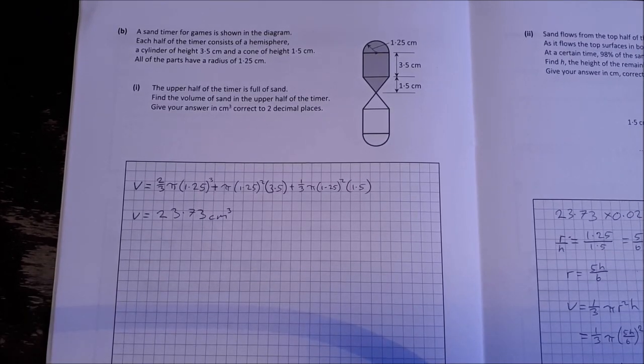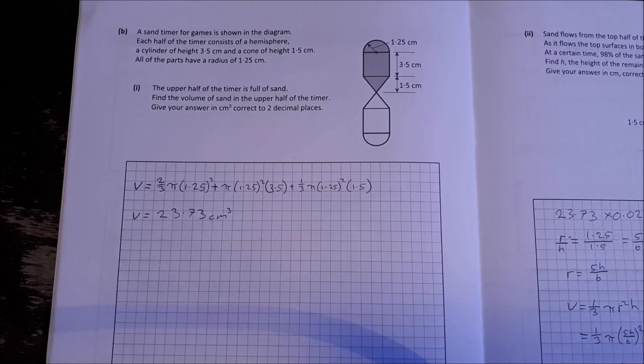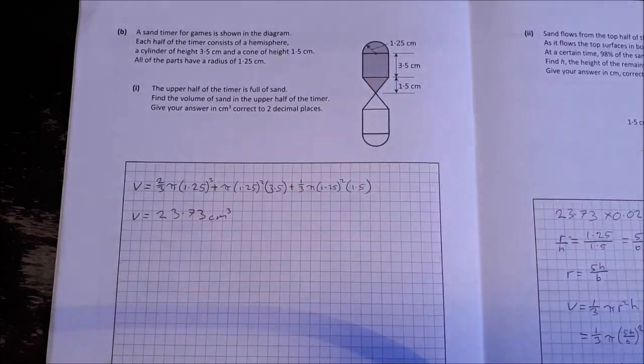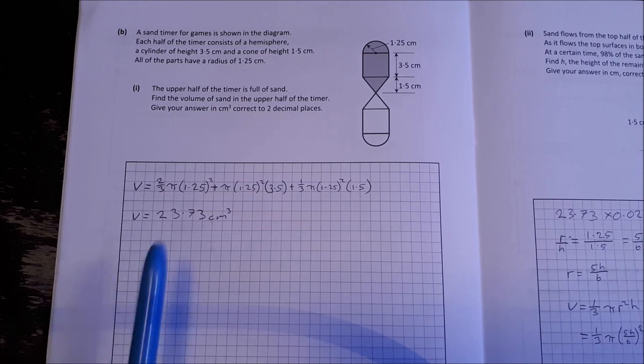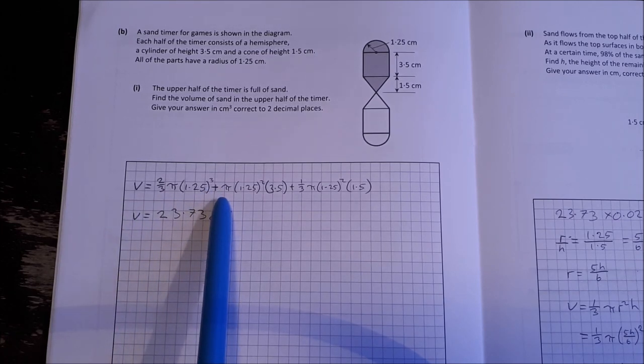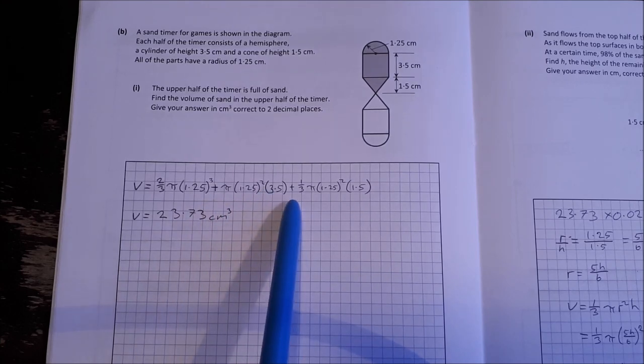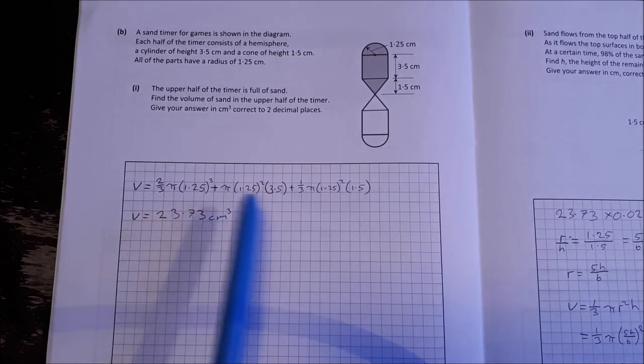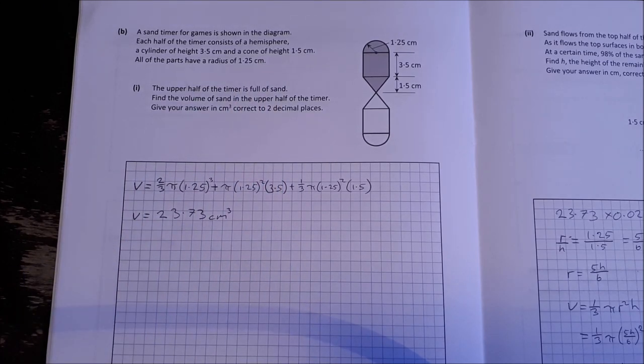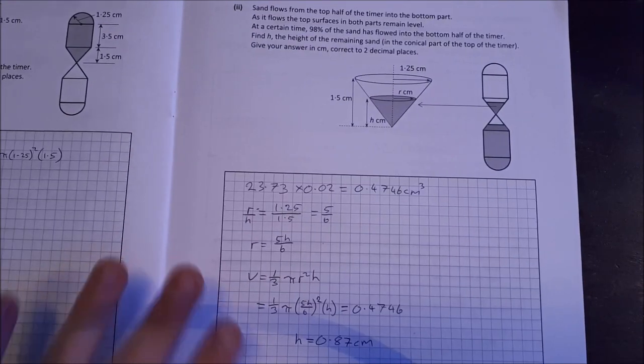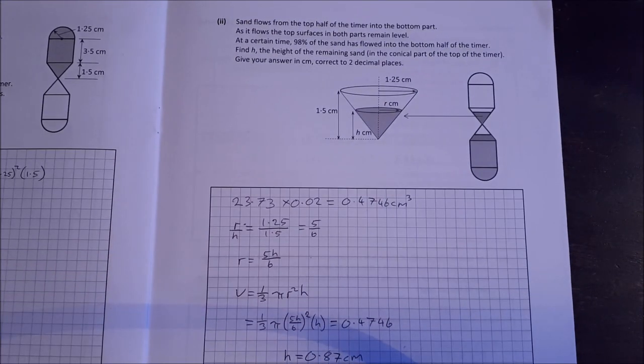Part B. A sand timer for games is shown in the diagram. Each half of the timer consists of a hemisphere, a cylinder and a cone. Cylinder is height 3.5, cone is height 1.5 and all the parts have radius of 1.25. Everything is in centimeters. The upper half of the timer is full of sand. Find the volume of sand in the upper half of the timer. Correct to two decimal places. So volume is simply going to be volume of the hemisphere plus the volume of the cylinder plus the volume of the cone. All these three formulas are in your log tables. Sub in the relevant values given and you get volumes equal to 23.73 centimeters.